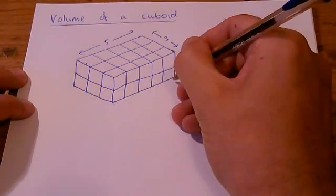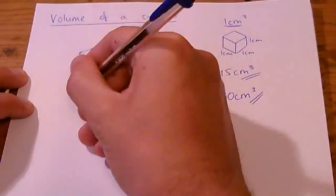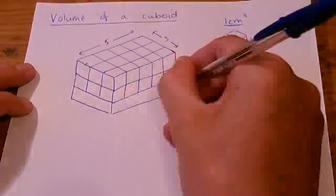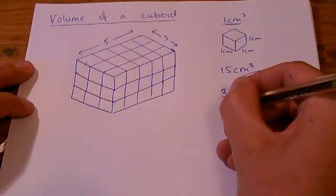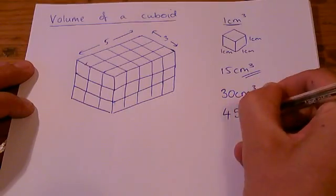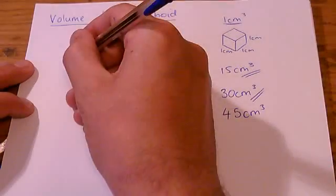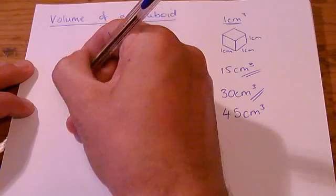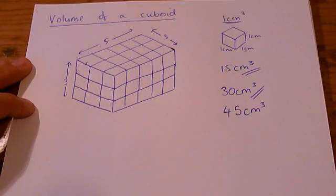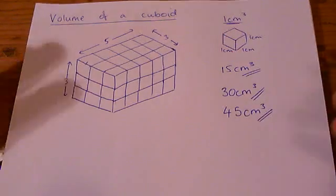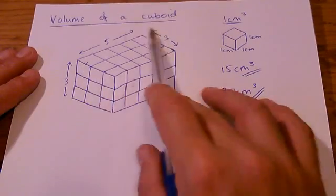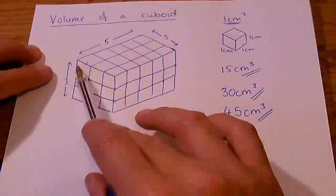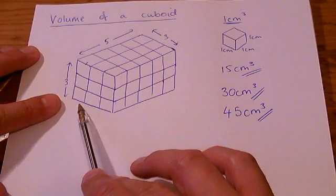And if I had a third layer, like this, the volume would be 45 centimetres cubed, because I would have 3 layers of cubes. And so on, you can keep building up the layers. But what's important to notice is that it's just the first layer, which was 15 cubes, multiplied by the number of layers.